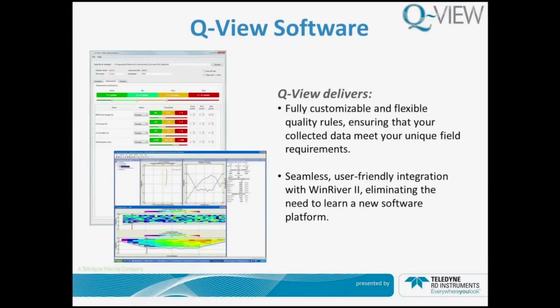We also deliver fully customizable and flexible quality rules. This means regardless of which agency or consulting firm that you work for, you get to set the rule set based on your parameters and your quality indicators. This is seamless friendly integration with WinRiver 2 — it runs in the background and allows you to collect data with the same software that you're familiar with today.